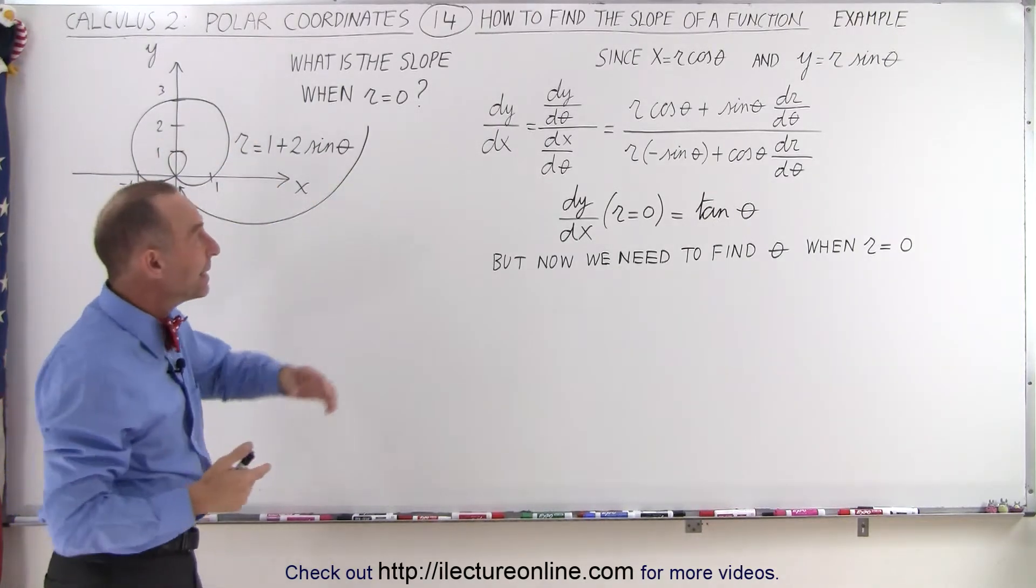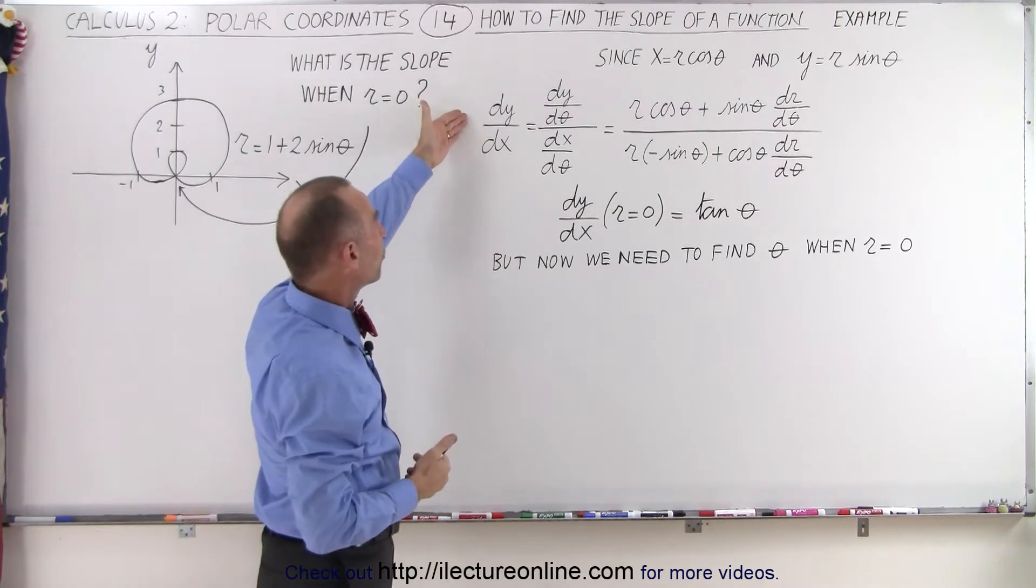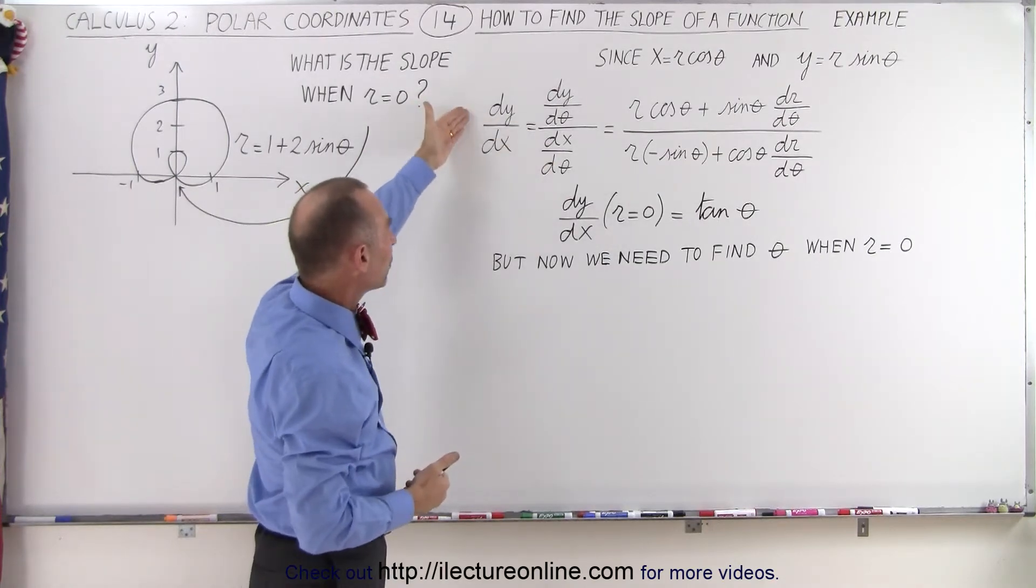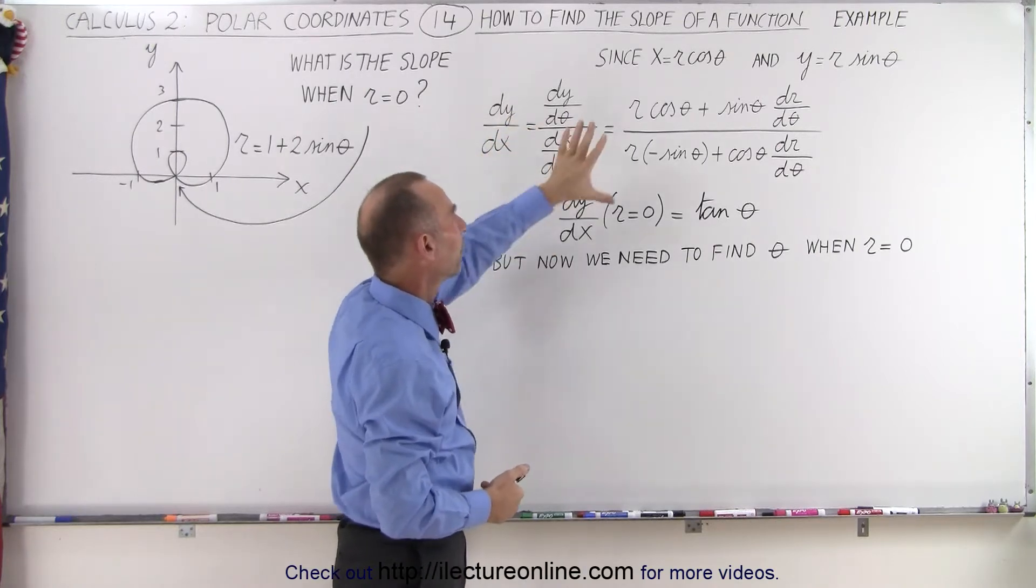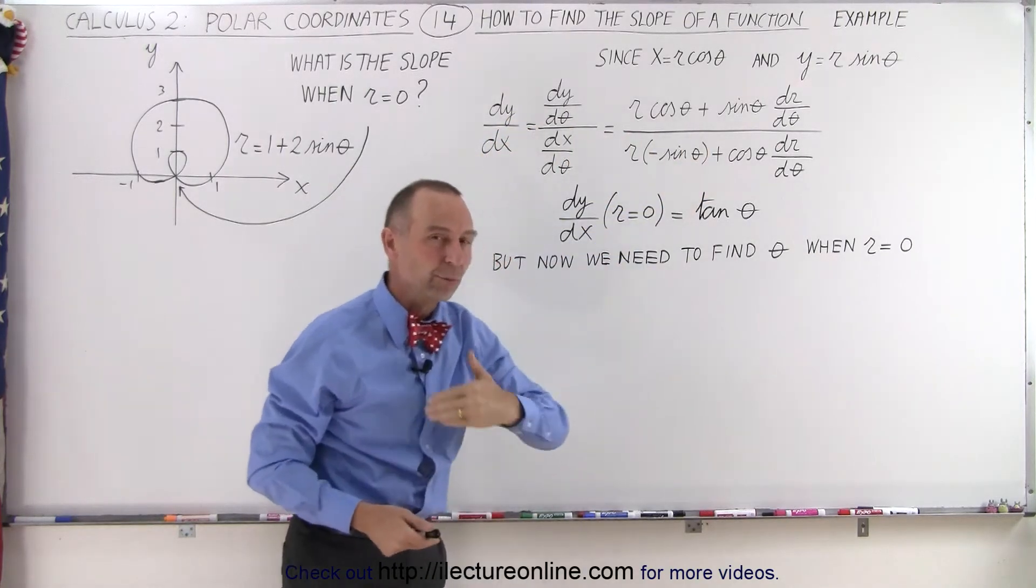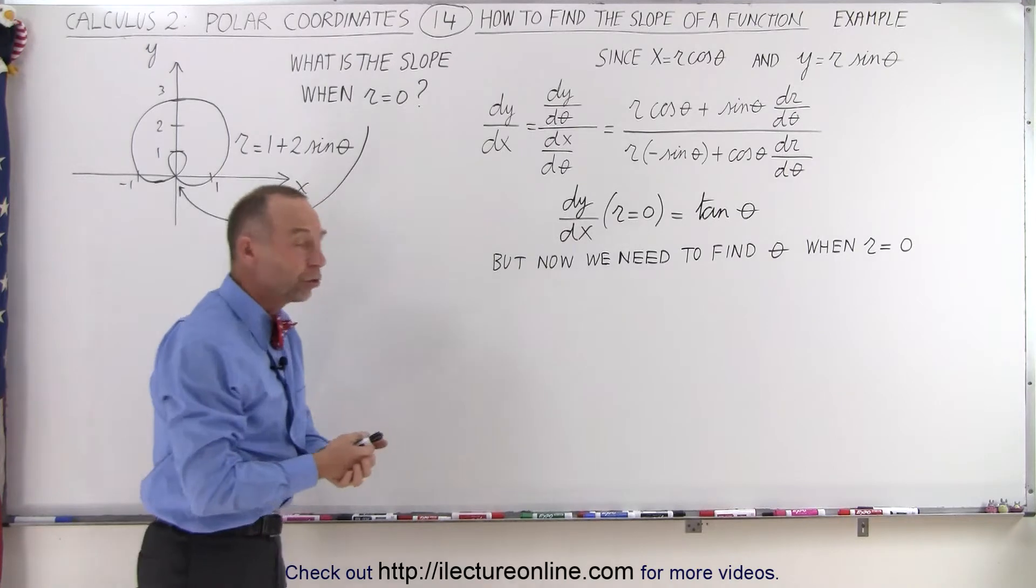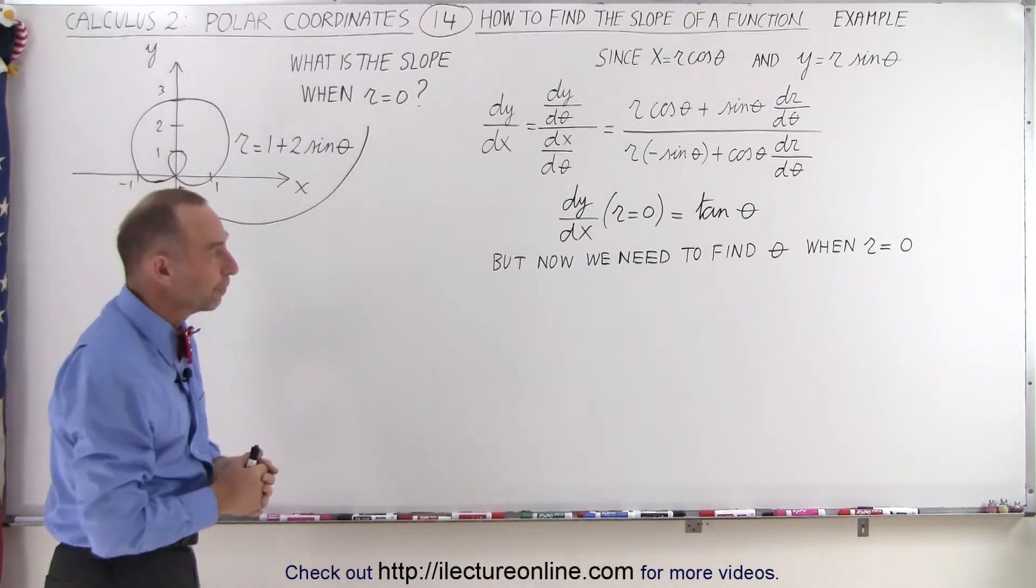By taking the derivative of polar functions, dy/dx is equal to the ratio of dy/dθ over dx/dθ, so we end up with this general expression in terms of r and theta for what the slope is of that equation anywhere on the function.